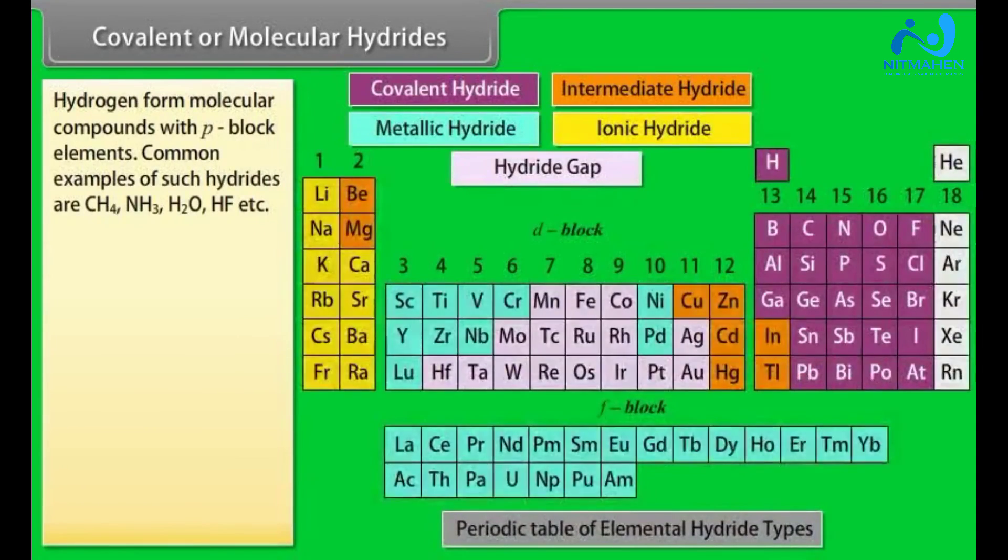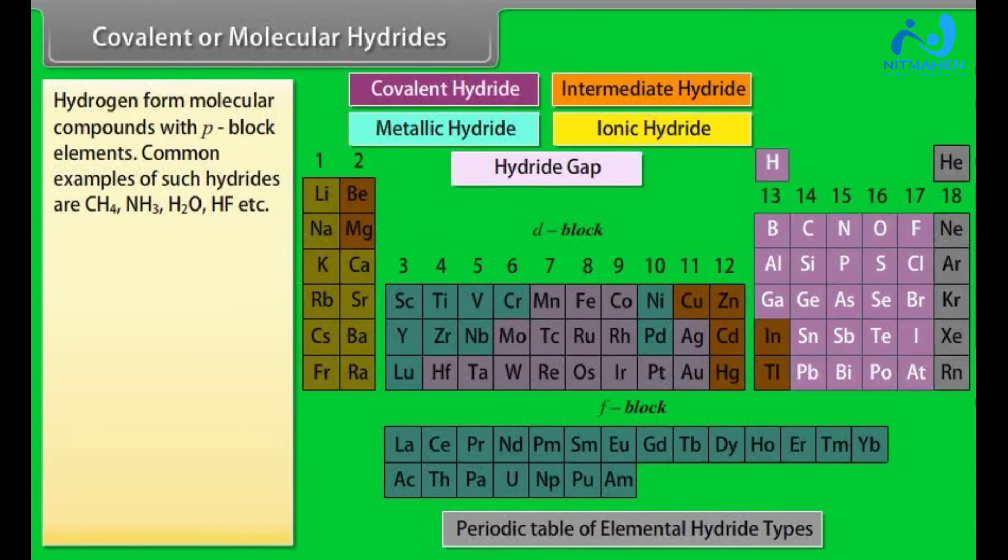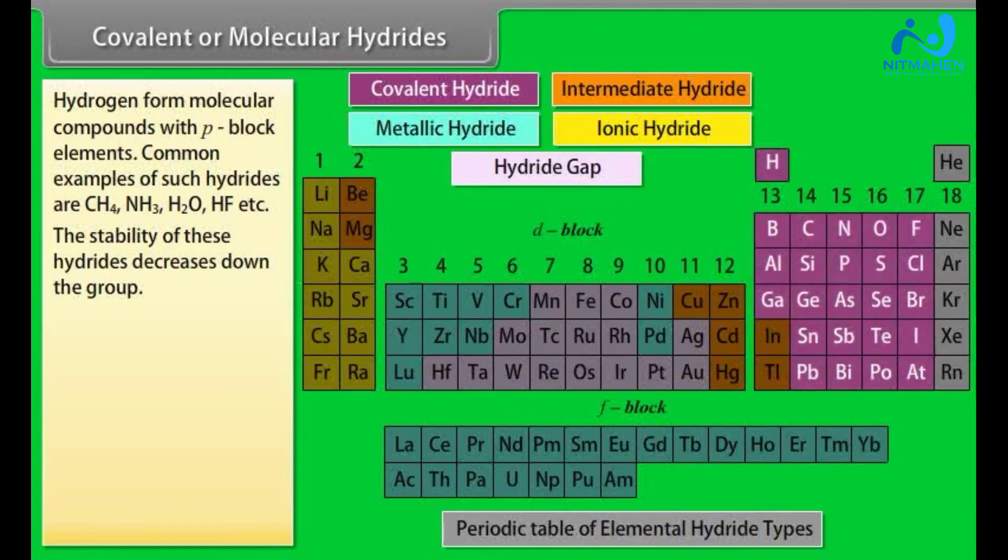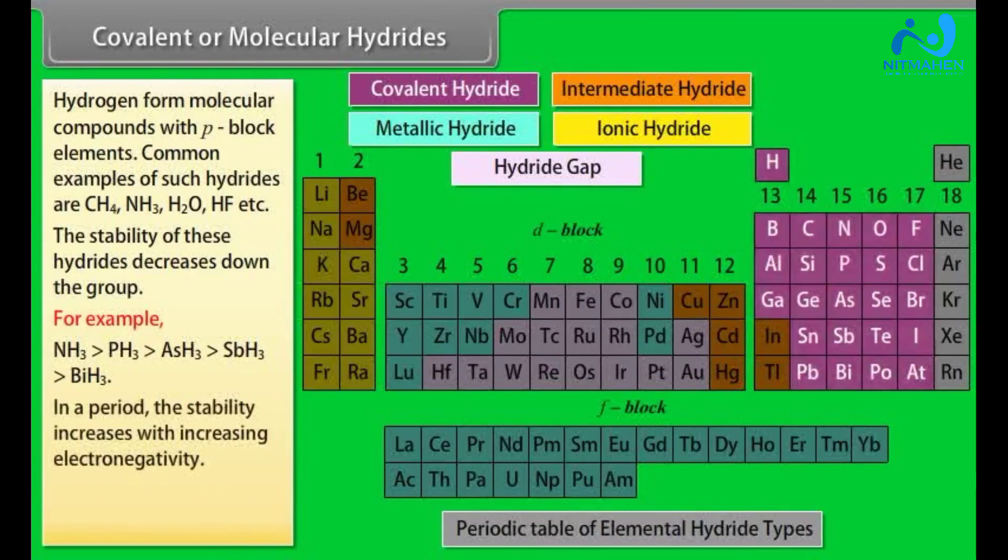Covalent or molecular hydrides. Hydrogen form molecular compounds with P-block elements. Common examples of such hydrides are CH4, NH3, H2O, HF, etc. The stability of these hydrides decreases down the group. In a period, the stability increases with increasing electronegativity.